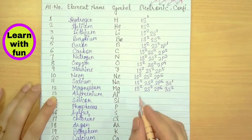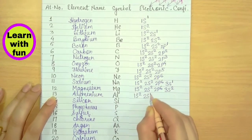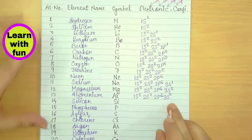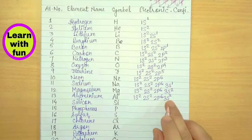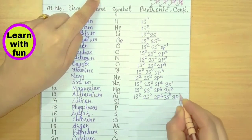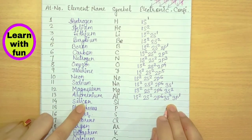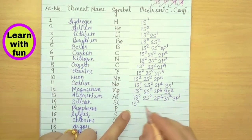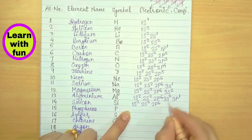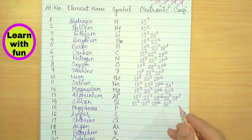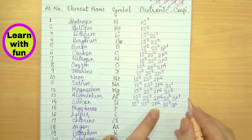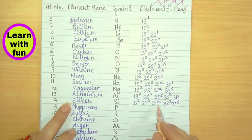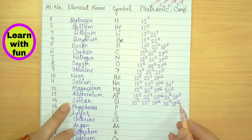Aluminum has 13 electrons: 1S2, 2S2, 2P6 fills 10, then 3S2 fills 2 more — 3 electrons are left overall from 13, with 2 filling 3S and 1 going into 3P1. Silicon has 14 electrons: 1S2, 2S2, 2P6, 3S2 fills 12 electrons, and the remaining 2 go into 3P2.